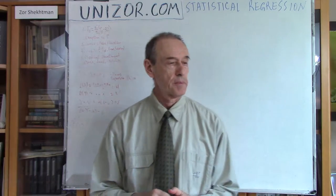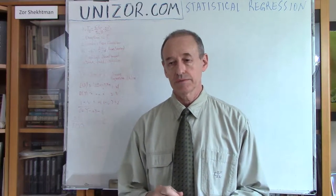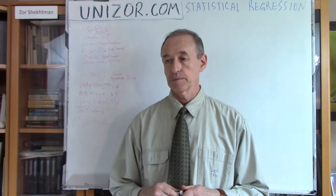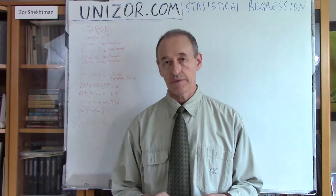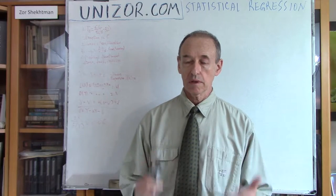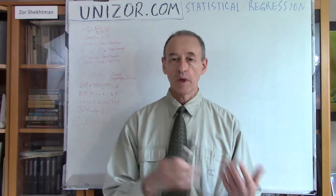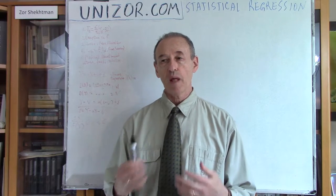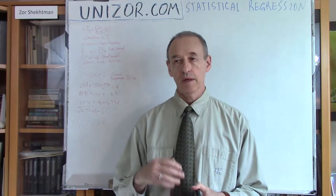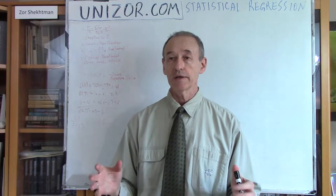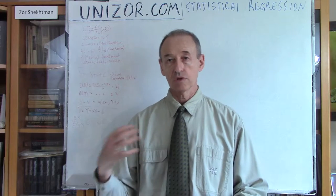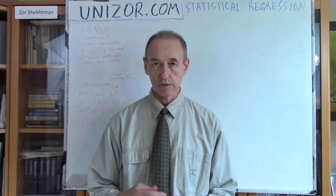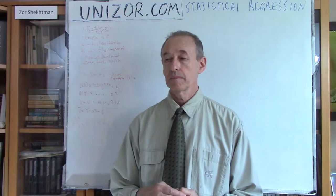So, statistical regression. Before going into the mathematics of this subject, let's talk about what statistical regression basically is. It's all about dependency between different things. If we are able to establish this dependency and state that it is relatively tight, then knowing one, we can actually predict or explain another. That's basically the reason why we are interested in statistical regression.